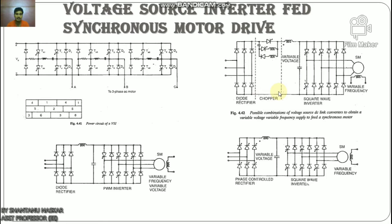A voltage source inverter feeding a synchronous motor can have either separate control or self-control. In separate control, the speed of the motor is determined by an external frequency from a crystal oscillator; open-loop control is possible, but the motor has instability and hunting problems similar to a conventional synchronous motor. In self-control, the inverter is controlled by firing pulses obtained from a rotor position sensor or induced voltage sensor; the motor operates in CLM mode with better stability characteristics.